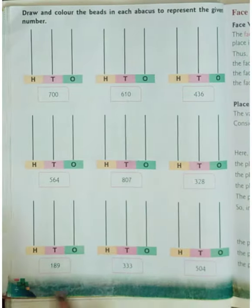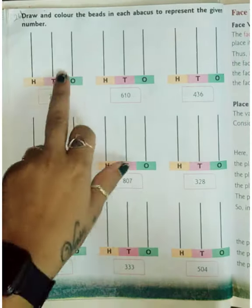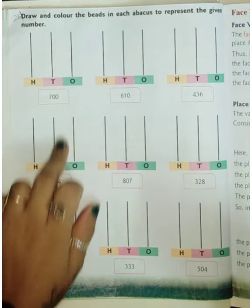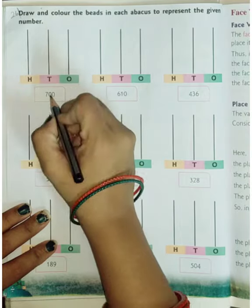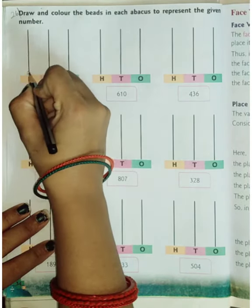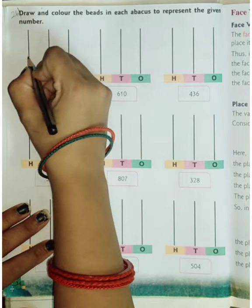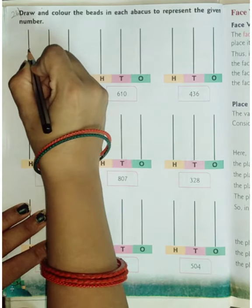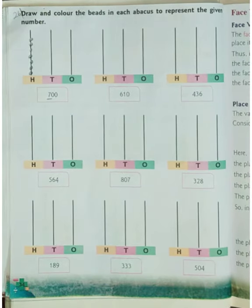Okay, now let's start with page number 34. Put the date today. Now here you have to make the beads. Here you have to make the beads. Zero zero zero zero seven here, hundred place seven. You can use your crayons also.